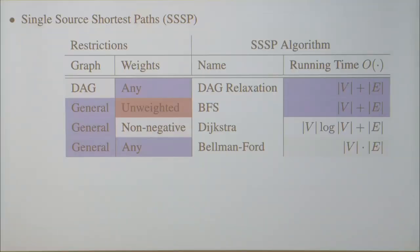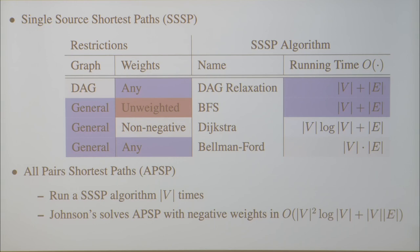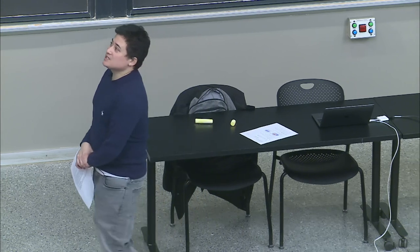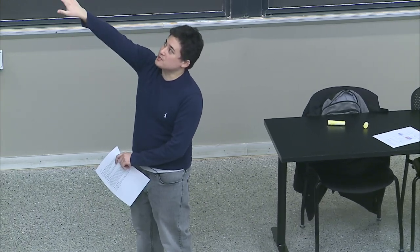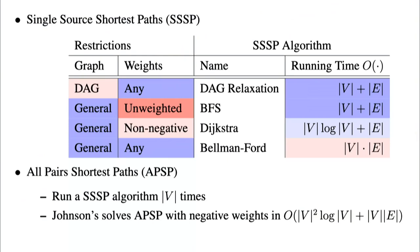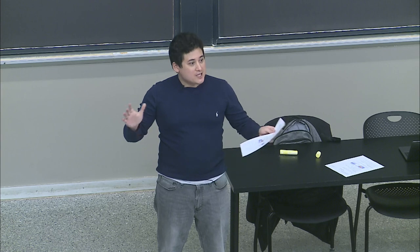In the last lecture we talked about all-pairs shortest paths. Running a single-source shortest path from each vertex is pretty good in most circumstances, and we don't know how to do much better for many cases. Johnson's algorithm gives us a speedup over V times Bellman-Ford by two tricks: reweight the graph — find if it has negative weight cycles, and if not, there exists a reweighting so all weights are non-negative but shortest paths are preserved — then use Dijkstra V times to get better running time.